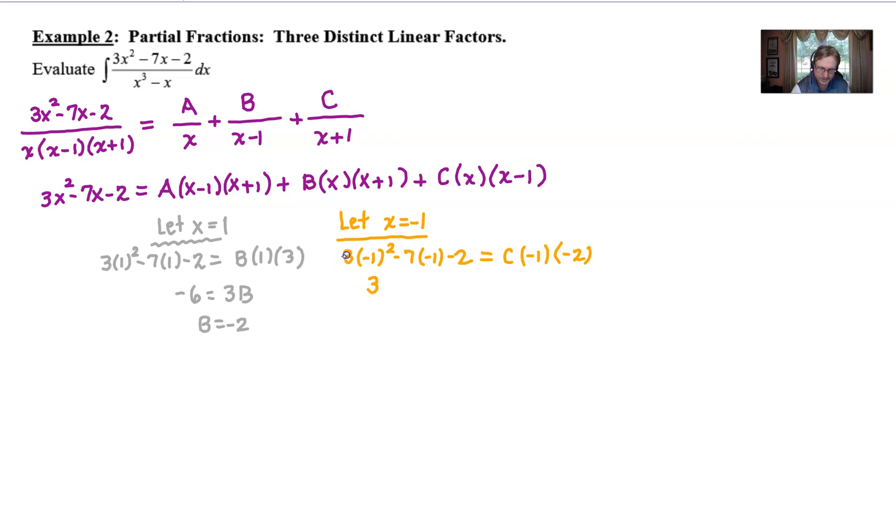Careful when you simplify this. Maybe we'll go a little slower here. 3 negative 1 squared is 3, 7 and 1 multiply to make 1. The negatives cancel. So we've got something that looks like this. But before long, we're going to get 8 on the left side is equal to 2C on the right side. So we found our C to be 4. We only have one more to get. And we're going to choose another x value.